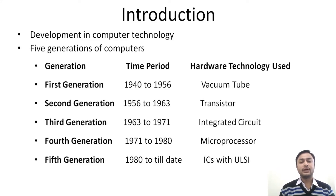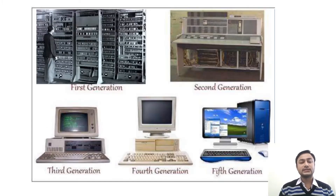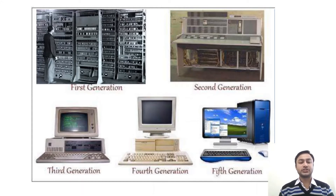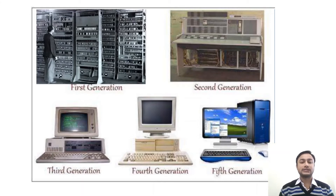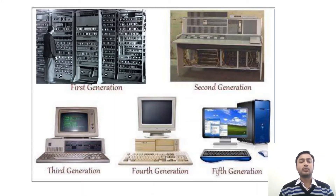Today in this session we will discuss the various technologies and features in different generations of the computer. You can see on the screen that there are different types of generations: first, second, third, fourth, and fifth. The first generation computer was very big and occupied a very large space, whereas in the fifth generation, the computer size is small and occupies less space compared to previous generations.